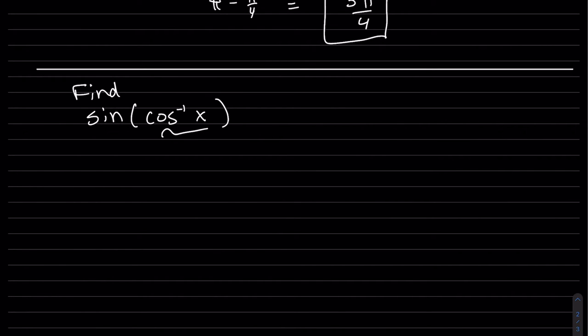We need to do the composition of sine of the cosine inverse of just a random x. So the composition, we should do the inside first. We do know we're looking for an angle, right? Inverses are the angles such that this is the ratio. So if that's an angle, we'll call that theta.